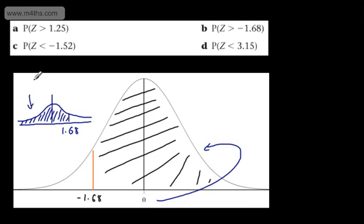We know that this area is given as phi of 1.68, and that will give us the probability that Z is less than 1.68. This is exactly the same area that we're looking for. So all we need to do is look up phi of 1.68. So phi of 1.68 will give us the probability that Z is greater than negative 1.68.